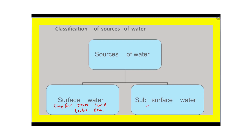Next is subsurface water. Subsurface water sources include: springs, wells, infiltration gallery, and infiltration well. Springs come from underground. We may or may not be able to use the spring depending on conditions.